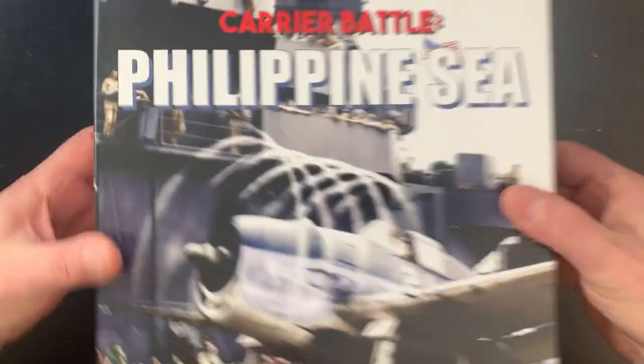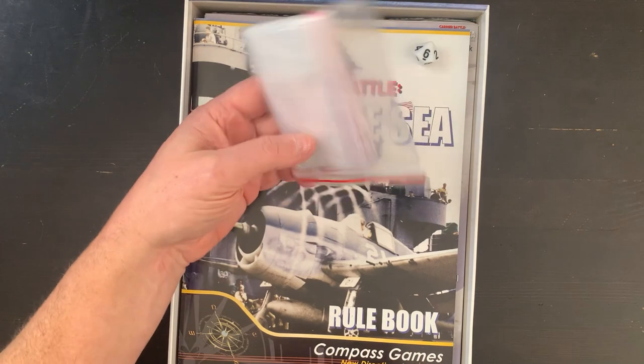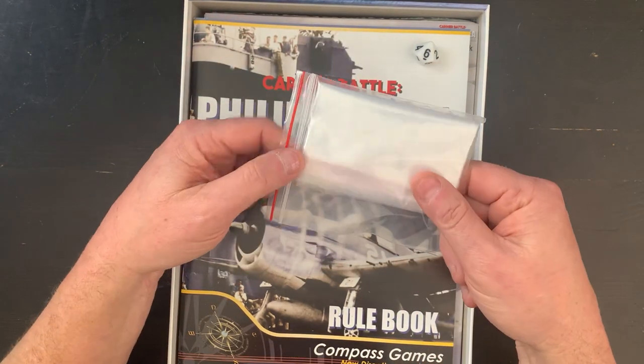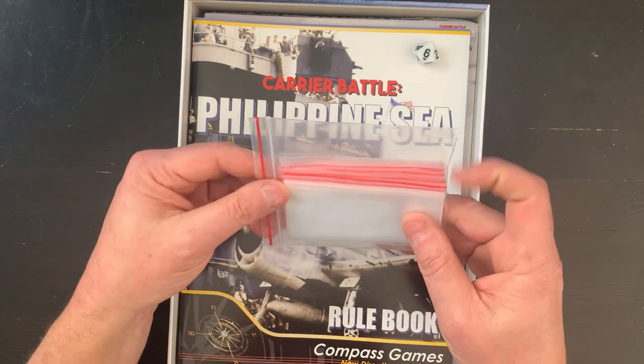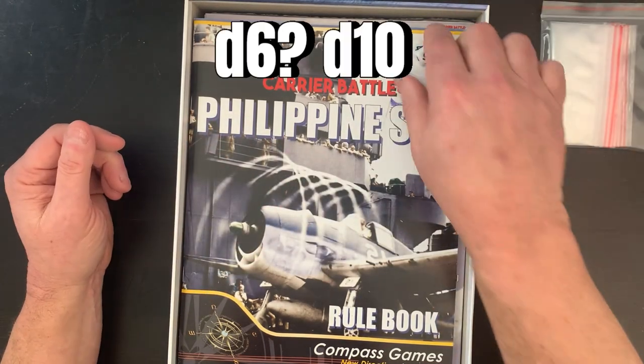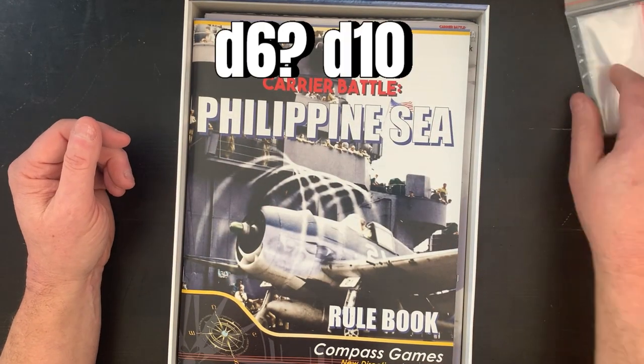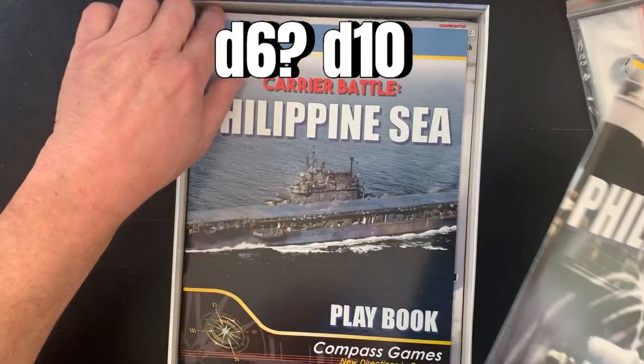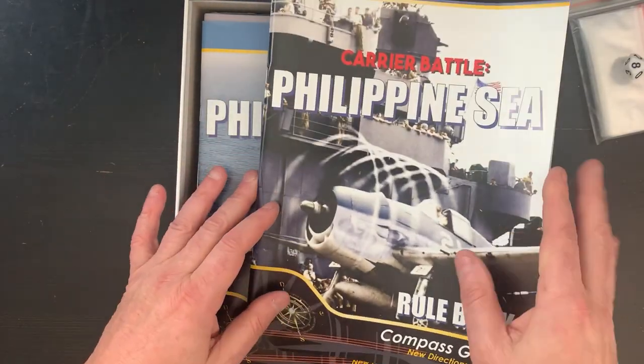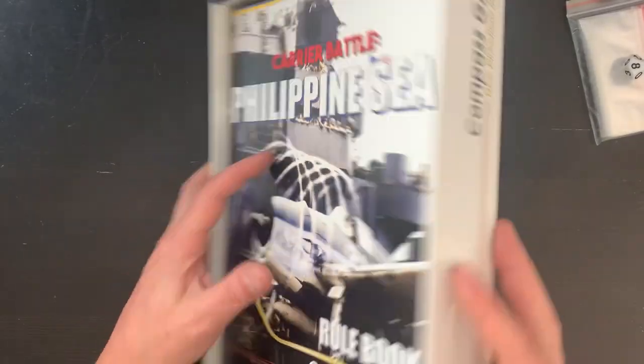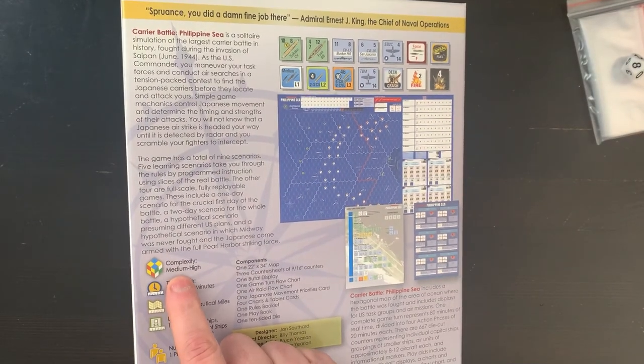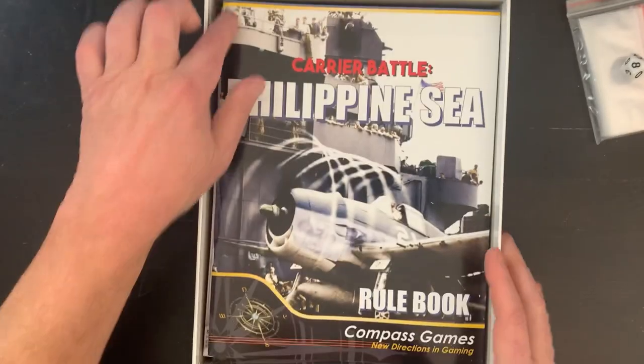Let's crack this open. Baggies, always appreciate that, although I've got my little plastic containers I use. One D6, pretty standard stuff. Rulebook, playbook. Let's just take those in order. Fairly thick. Did I mention that this says complexity medium to high?